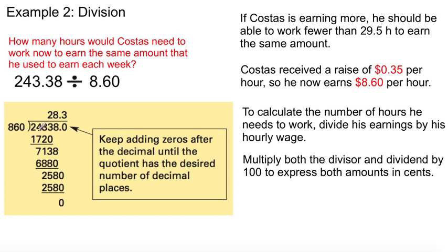All right, so that's how much he used to make, that's how much he's making now. Let's work out how much he needs to work. To calculate the number of hours he needs to work, divide his earnings by his hourly wage. Here's his hourly wage, previous earnings. Now to make it easy, just to eliminate all of the decimals so we don't have to work after the fact, multiply both the divisor and dividend by 100 to express both amounts in cents.